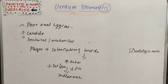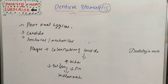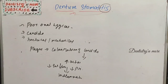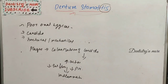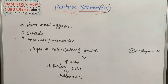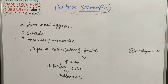The clinical features include erythema and sometimes edema of the mucosa in contact with the denture — the denture-bearing areas. Sharp edges of the denture can cause chronic irritation and should be trimmed. Most patients do not experience pain. Complications can include angular stomatitis or papillary hyperplasia in the palatal vault.